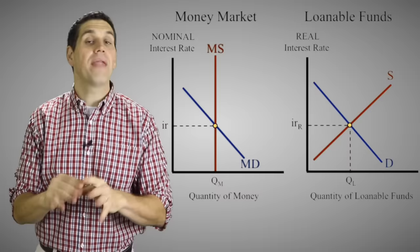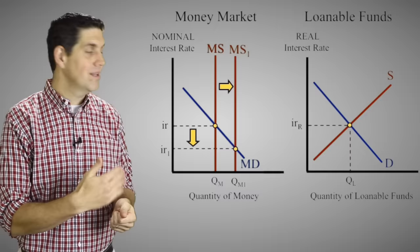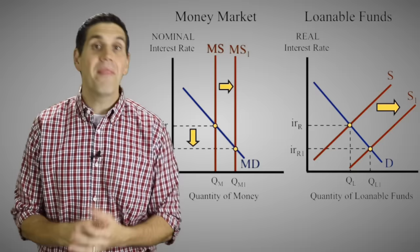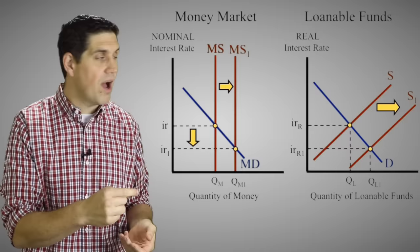Let's assume the economy is at full employment — we have both the natural rate of unemployment and the natural rate of interest, so we don't have a lot of inflation or unemployment. Now assume the central bank increases the money supply, which decreases nominal interest rates and leads to more lending. Looking at the loanable funds graph, there's an increase in the supply of loanable funds, driving down the real interest rate. A decrease in the nominal interest rate clearly causes the real interest rate to go down — but that's just the short run.